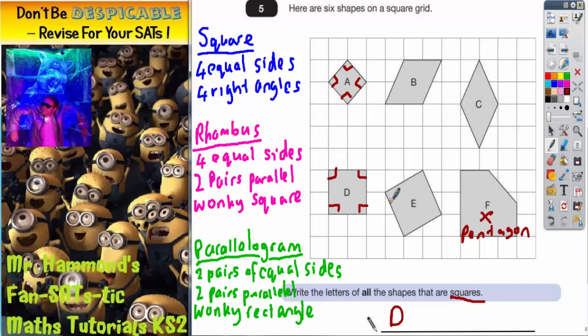If you try that on shape E, it will also work and you will find right angles in the corners. So shape A looks like a square, 4 right angles, 4 equal sides. So shape A works.